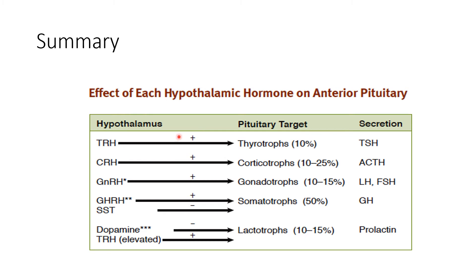A summary: TRH goes to thyrotropes, which constitute about 10% of the total cell population. CRH goes to corticotropes — 10 to 25%. GnRH goes to gonadotropes — 10 to 15%. Growth hormone releasing hormone goes to somatotropes, which constitute the majority of cells within the anterior pituitary gland. Somatostatin also goes to these cells but inhibits growth hormone release. Dopamine goes to lactotropes and inhibits prolactin release, whereas elevated TRH can stimulate prolactin secretion.